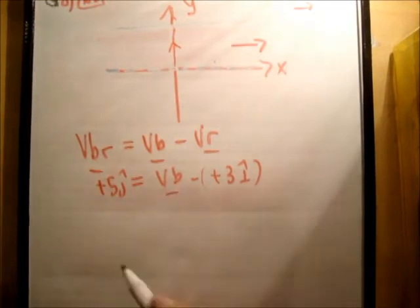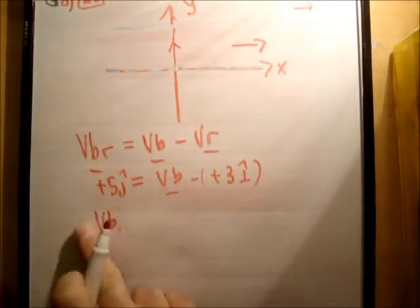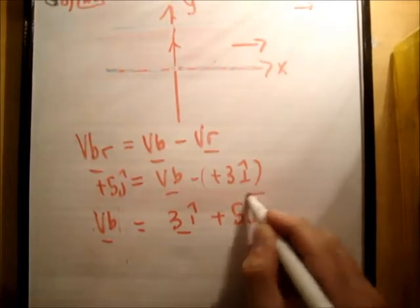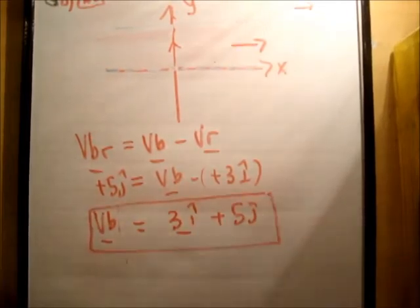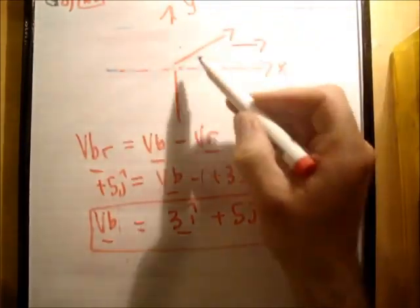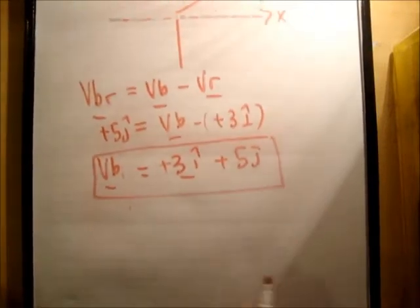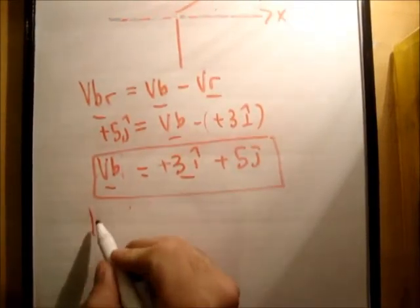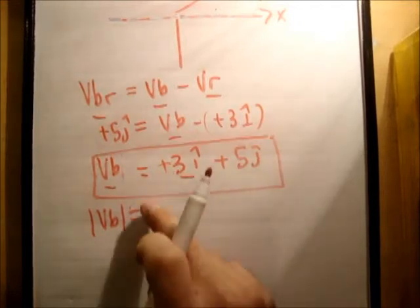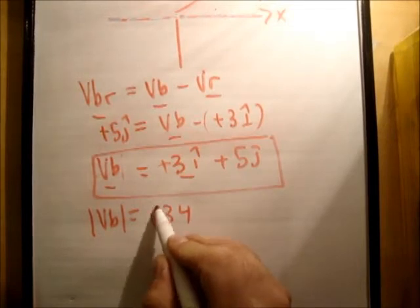Of course VB won't actually be that. So VB is going to be 3 i hat plus 5 j hat, which makes sense. If I try and head straight across I'll actually end up going this direction, which is in the positive i hat, positive j hat direction. The magnitude of that is going to be the square root of 9 plus 25, so the square root of 34.